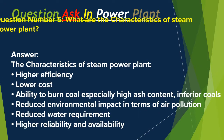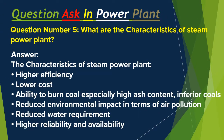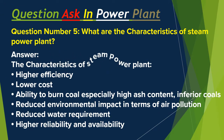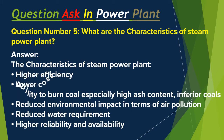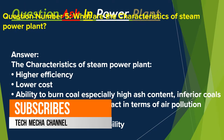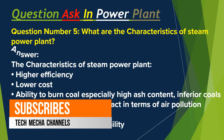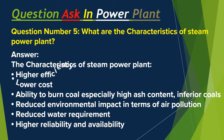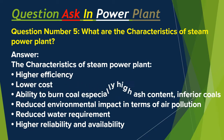Question number five: What are the characteristics of a steam power plant? Answer: The characteristics of a steam power plant are: higher efficiency, lower cost, ability to burn coal especially high ash content inferior coals, reduced environmental impact in terms of air pollution, reduced water requirement, and higher reliability and availability.